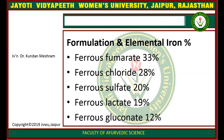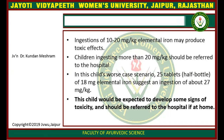Regarding formulations and elemental iron percentages: ferrous fumarate contains 33% elemental iron; ferrous fluoride contains 28%; ferrous sulfate contains 20%; ferrous lactate contains 19%; and ferrous gluconate contains 12% elemental iron. Ingestion of 10 to 20 mg per kg is considered low risk. Children with ingestion of more than 20 mg per kg should be referred to a physician. In a worst-case scenario, 25 tablets of 80 mg elemental iron suggests ingestion of about 27 mg per kg, and this child would be expected to develop some signs of toxicity and should be referred to hospital.